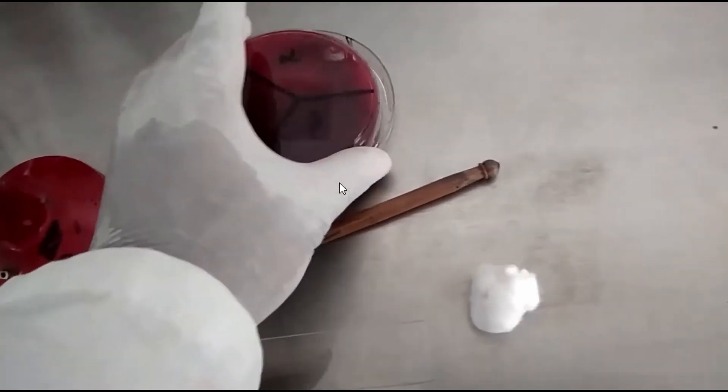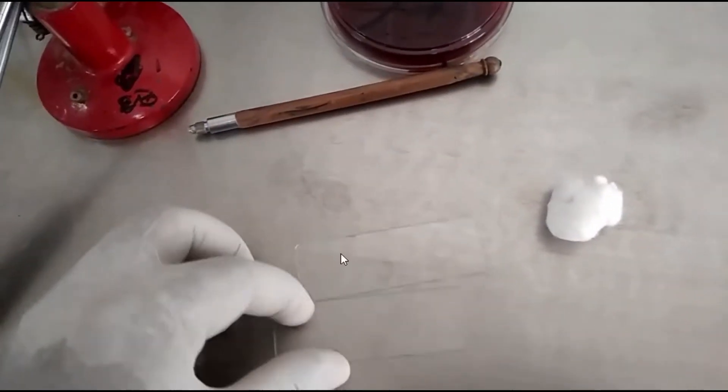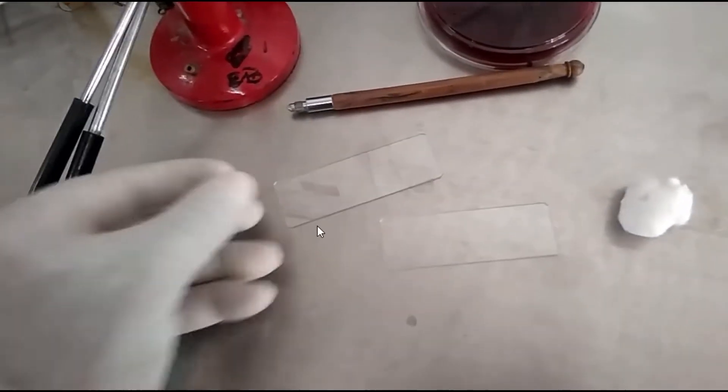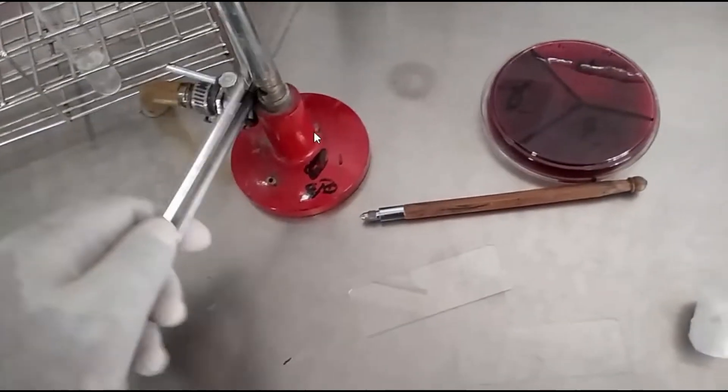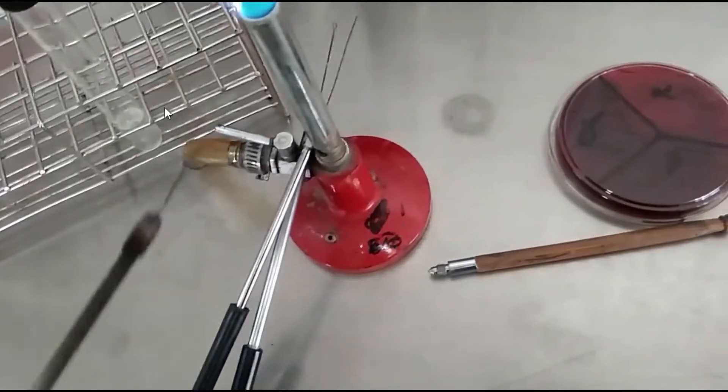This is the diamond pencil and this is glass slide. This is our inoculating loop, this is Bunsen burner, and this one is liquid medium having growth.